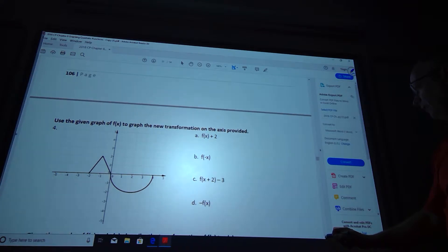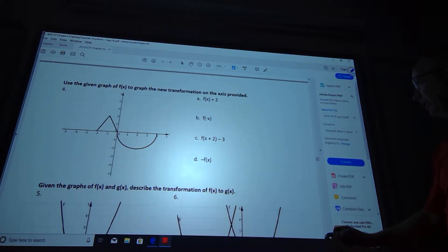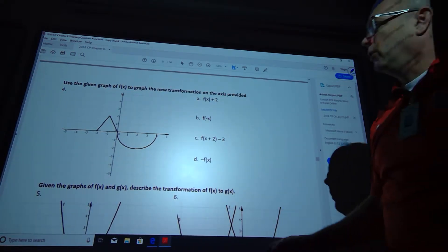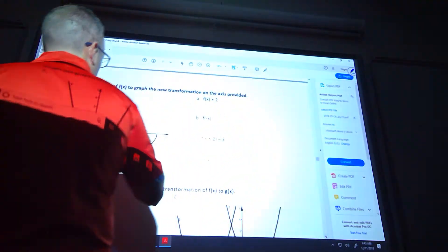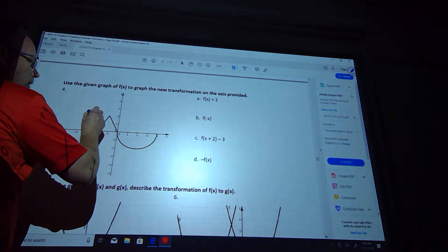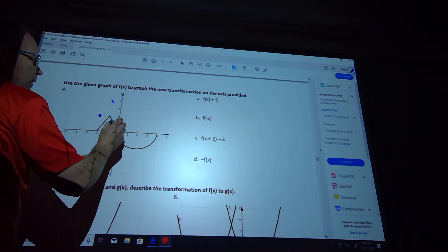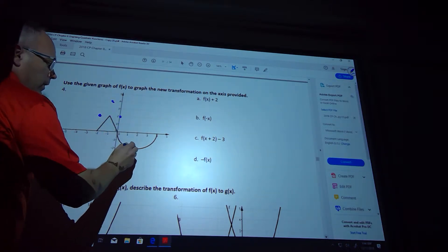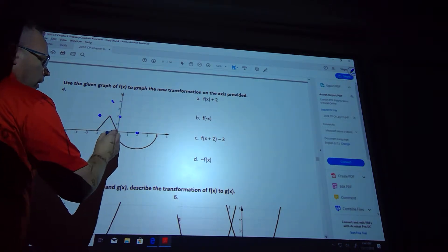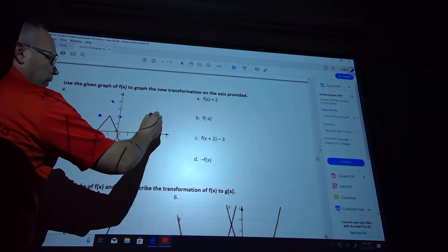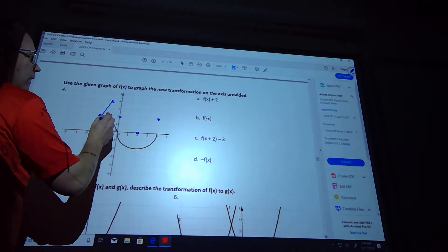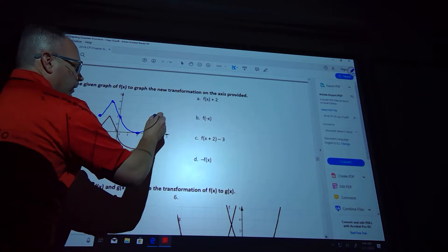Number 4 is kind of a goofy-looking graph. I can't tell you what kind of function it is, but there's things that we can do. So we're looking at the peaks of everything. This one is going to shift up 2. So I go up 2 here, I go up 2 here, I go up 2 here. This comes up 2, and this one here comes up 2. So my letter A looks like this, if I can draw it appropriately.